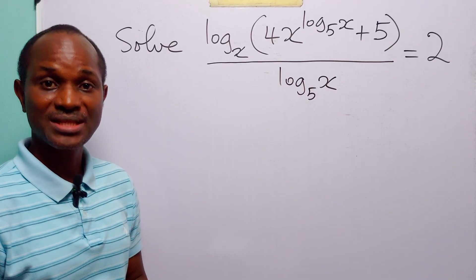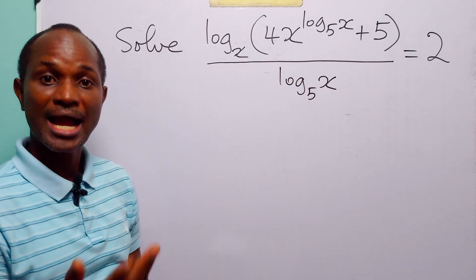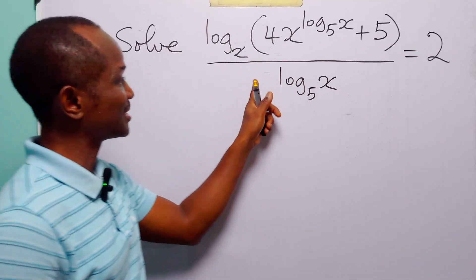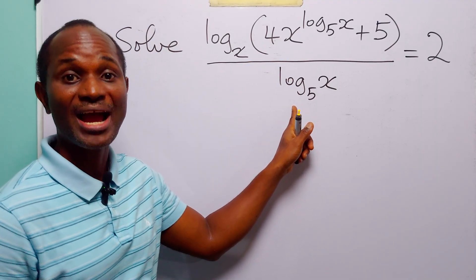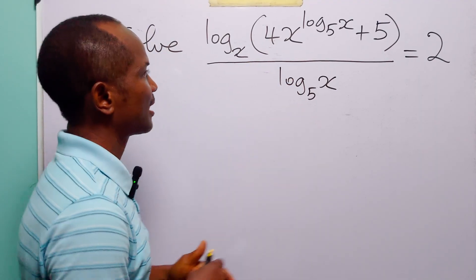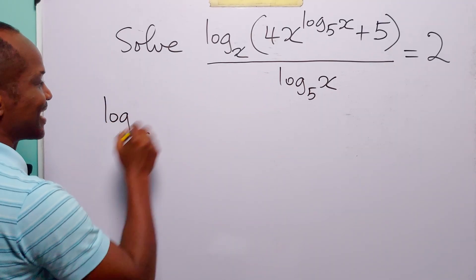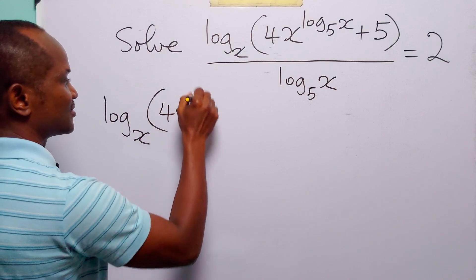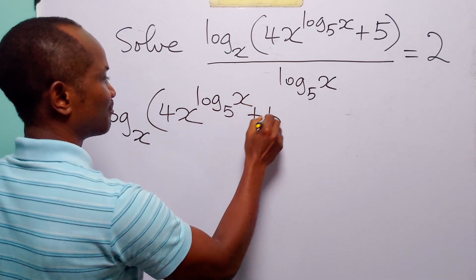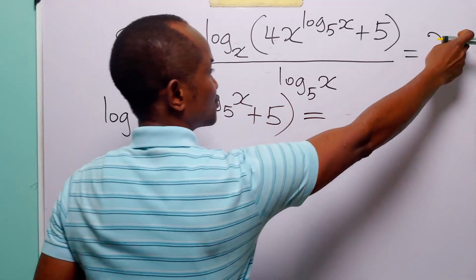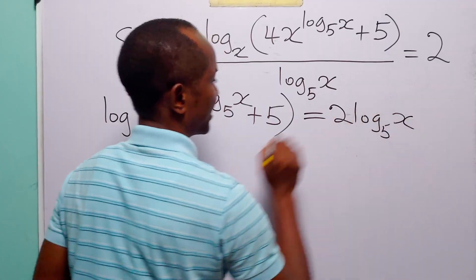To solve this problem, the first thing I am going to do is to get rid of this fraction on the left-hand side of the equation. To do that, I will multiply both sides of this equation by this denominator, that is log base 5 of x. When I do this, on the left-hand side we have log base x of 4x to the power log base 5 of x, plus 5.